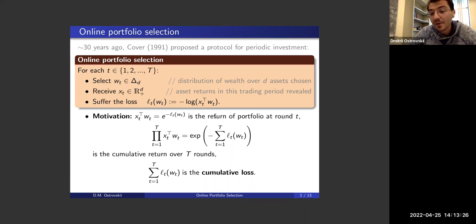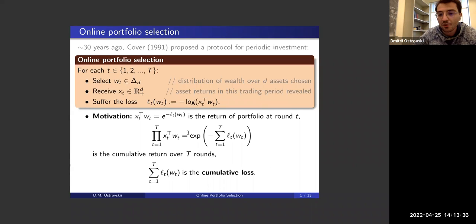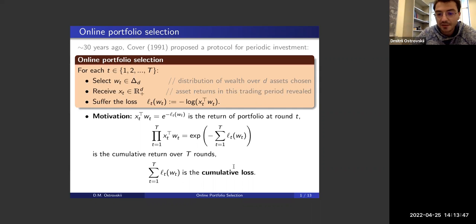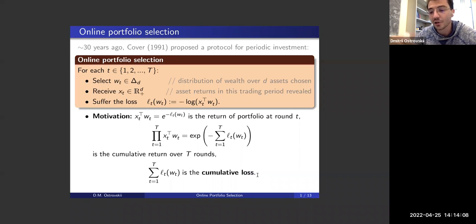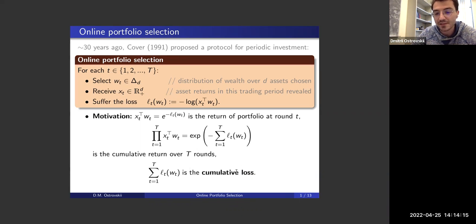The loss is minus log partly because of a preference for convex over concave functions, but more importantly, when you sum up these minus logs you get the log of the exponential — and this exponential is your cumulative return after all trading periods, since returns multiply. This is why we use the logarithmic loss function. The cumulative loss is the sum of l_t(w_t), and the goal is to find a strategy that keeps this cumulative loss as small as possible over T rounds.